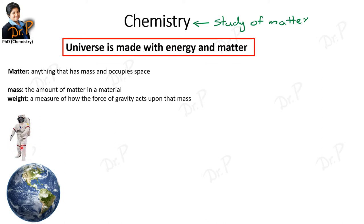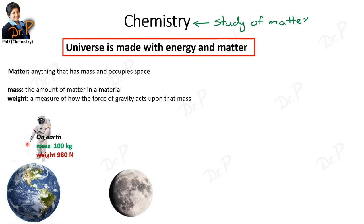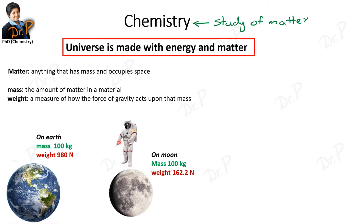To understand mass and weight, consider a person in a space suit. He has a certain mass — the material he is composed of: bones, flesh, blood — let's say 100 kilograms. On Earth under the gravitational force, his weight is 980 newtons. Now we drop this person on the moon, and since he's in a space suit, not even a drop of sweat escapes — the amount of material remains constant, so the mass stays constant.